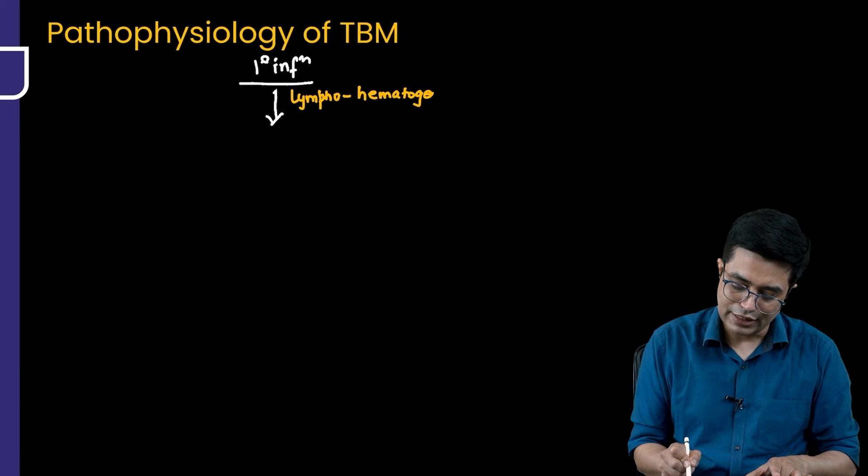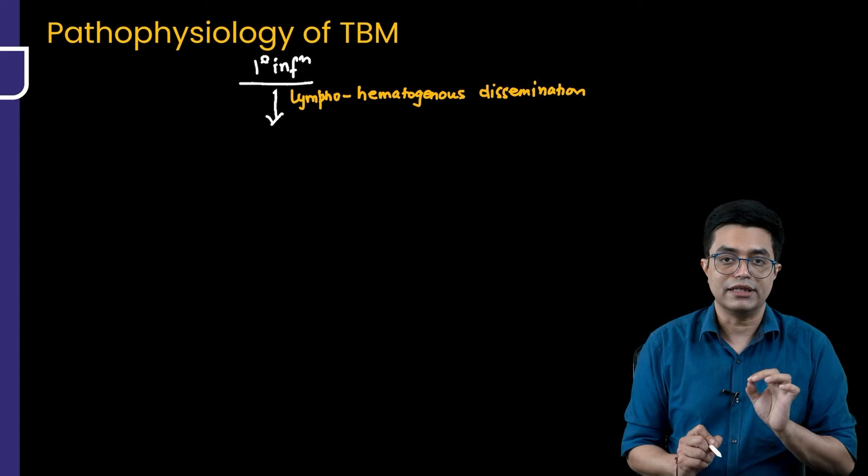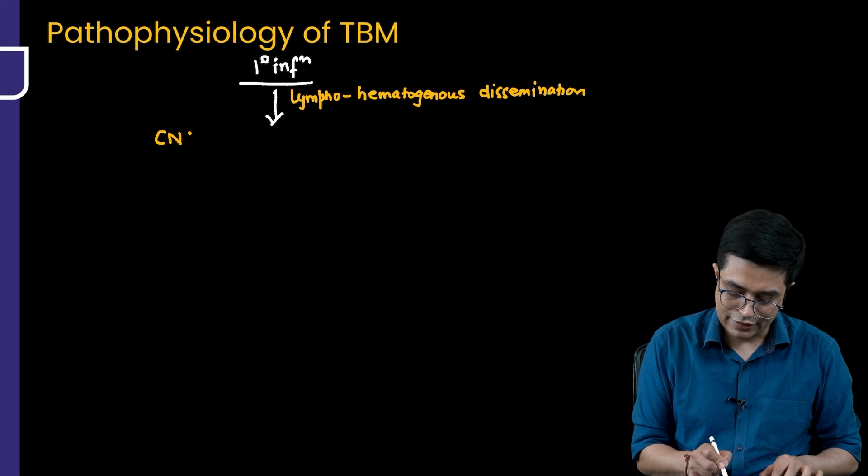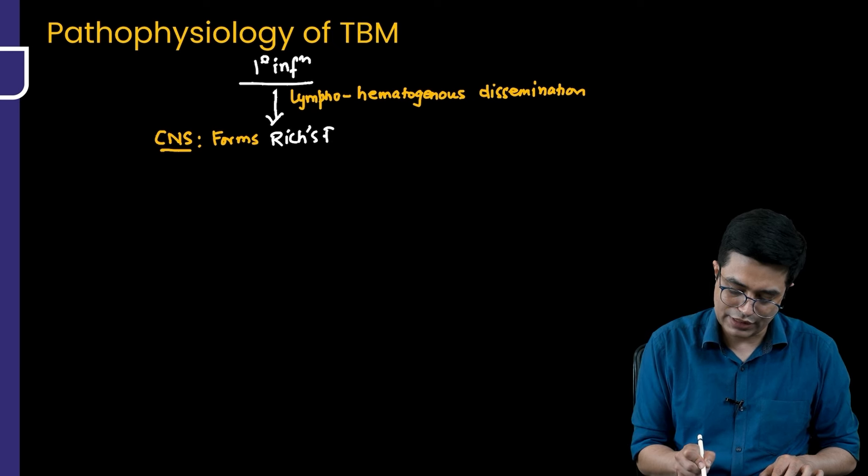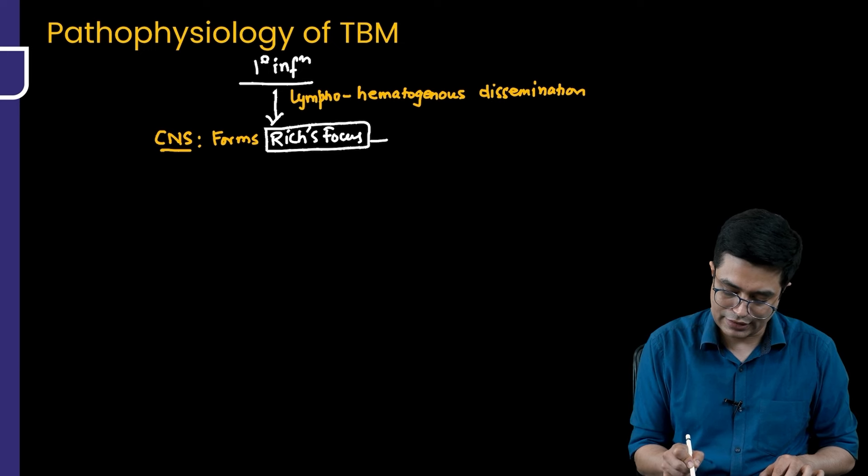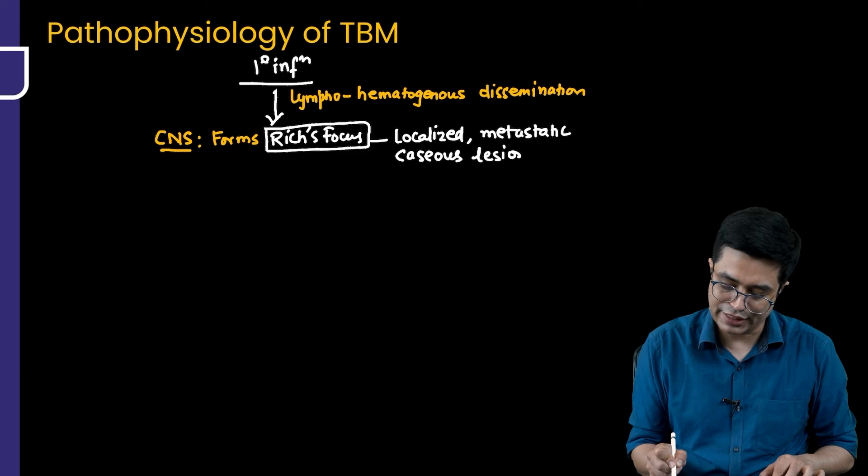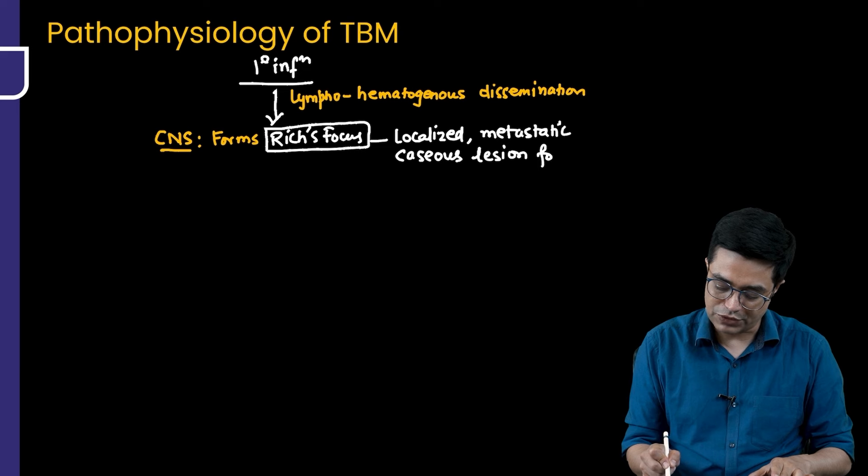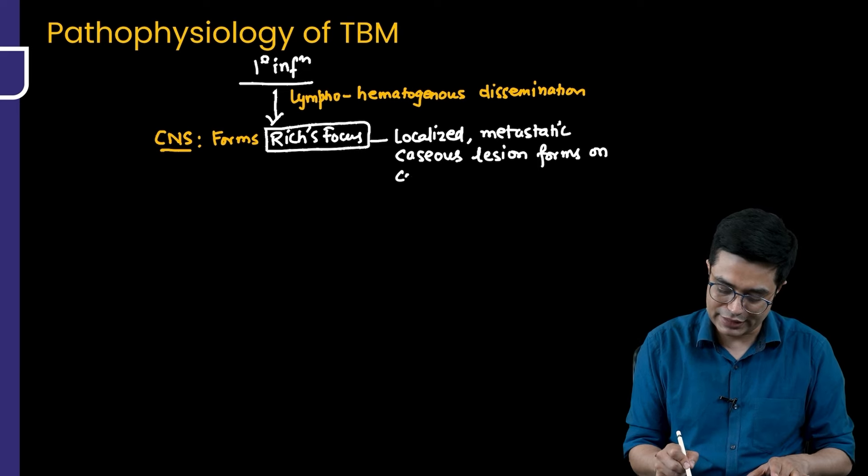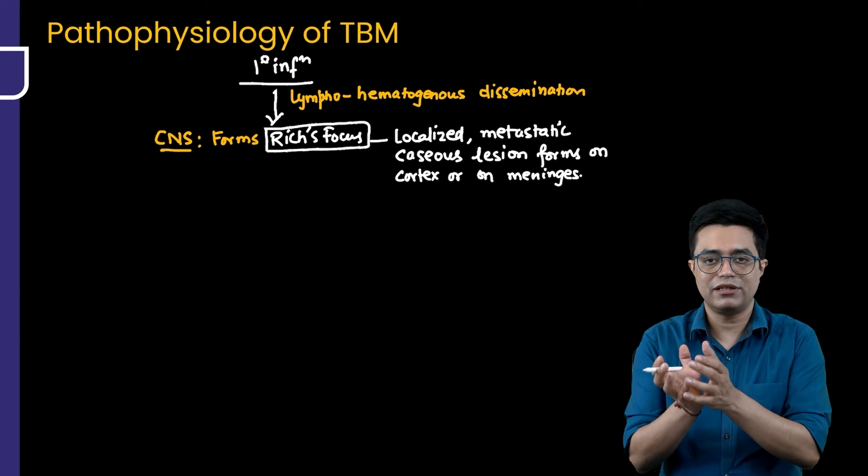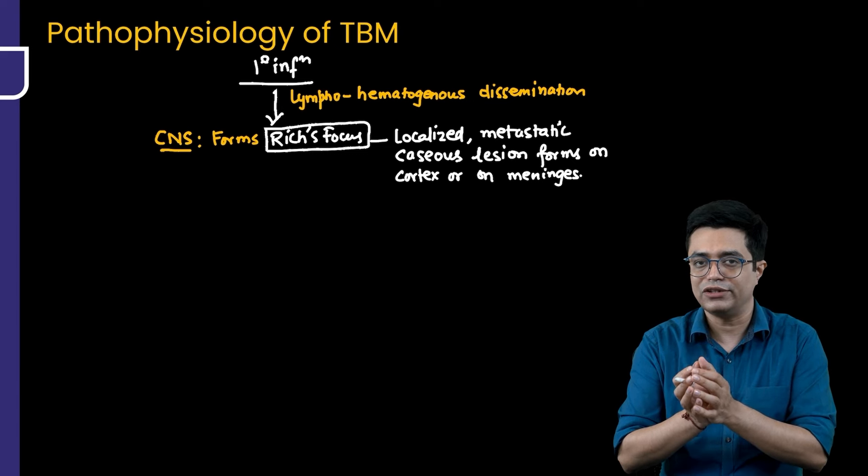There is a lymphohematogenous dissemination, that is spread of the tubercle bacilli from the primary infection into the CNS. In CNS, it reaches the CNS. What does it do? It forms an entity known as Rich's focus. What is a Rich's focus? Rich's focus is a localized metastatic caseous lesion. Caseous means like a cheesy. It is a localized metastatic caseous lesion which forms on the superficial parts of the cerebral cortex or on the meninges. It acts like a space where the tubercle bacilli are filled. It is a localized collection of high density of tubercle bacilli.